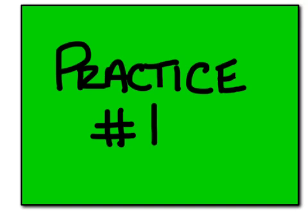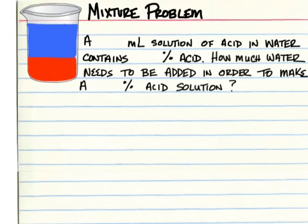Practice number 1. A 950 milliliter solution of acid in water contains 11% acid. How much water needs to be added in order to make a 7% acid solution?